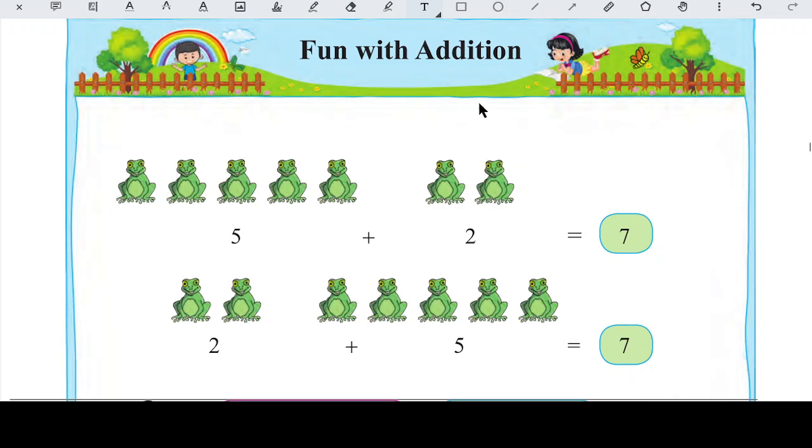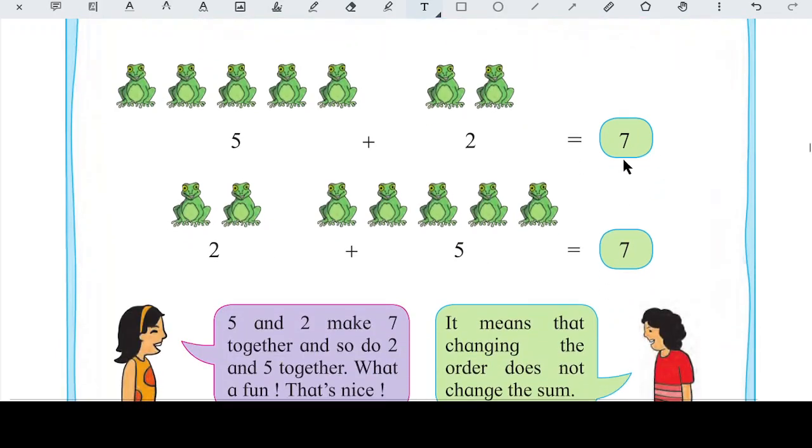To yeh kaise aaya? Yeh aise aaya ki 5, suppose agar yahan pe maine banaya hai, jaise aapko pehle sikhaya gaya tha ki 5, jaise ki suppose agar 5 dots banaye hain, okay, jaise 5 dots hain, to 5 aur usmein do aur dots add kar diya jayega to woh ho jayega 6, 7. So total there are 7 frogs. So 5 plus 2 is equal to 7. Seekha hai, lekin ek dusri baat bhi humein sikhayi gayi hai ki yahan pe 2 frogs hain aur yahan pe 5 frogs hain, to 2 plus 5 bhi 7 hi hoga, angels, okay.